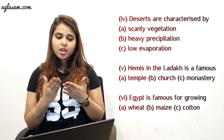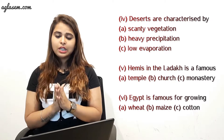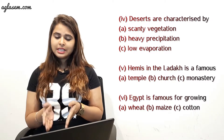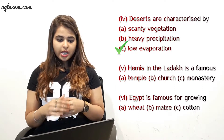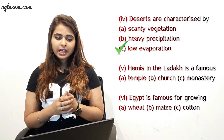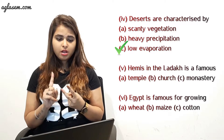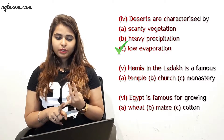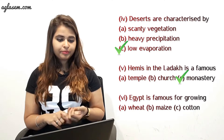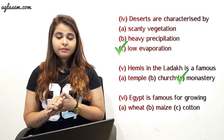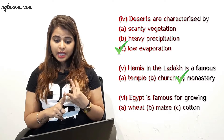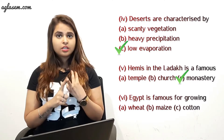Part 4 — deserts are characterized by? A) Scanty vegetation, B) Heavy precipitation, C) Low evaporation. The answer is A) Scanty vegetation. Part 5 — Hemis in Ladakh is famous for? A) Temple, B) Church, C) Monastery. The answer is C) Monastery. Part 6 — Egypt is famous for growing? The answer is C) Cotton.